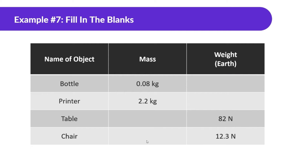Let's do a little example, just filling in the blank. We have a bottle with a mass of 0.08 kilograms. What is its weight on Earth? Remember, weight is the same thing as force of gravity, which equals mass times gravity. The mass is 0.08 and gravity on Earth is 10 meters per second squared. So this is going to be 0.8 newtons.